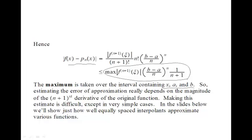So the approximating error of approximation, the estimated error of approximation really depends on the n plus first derivative of the original function. The other terms, namely these, are the same for every function. So that's the key term right there.